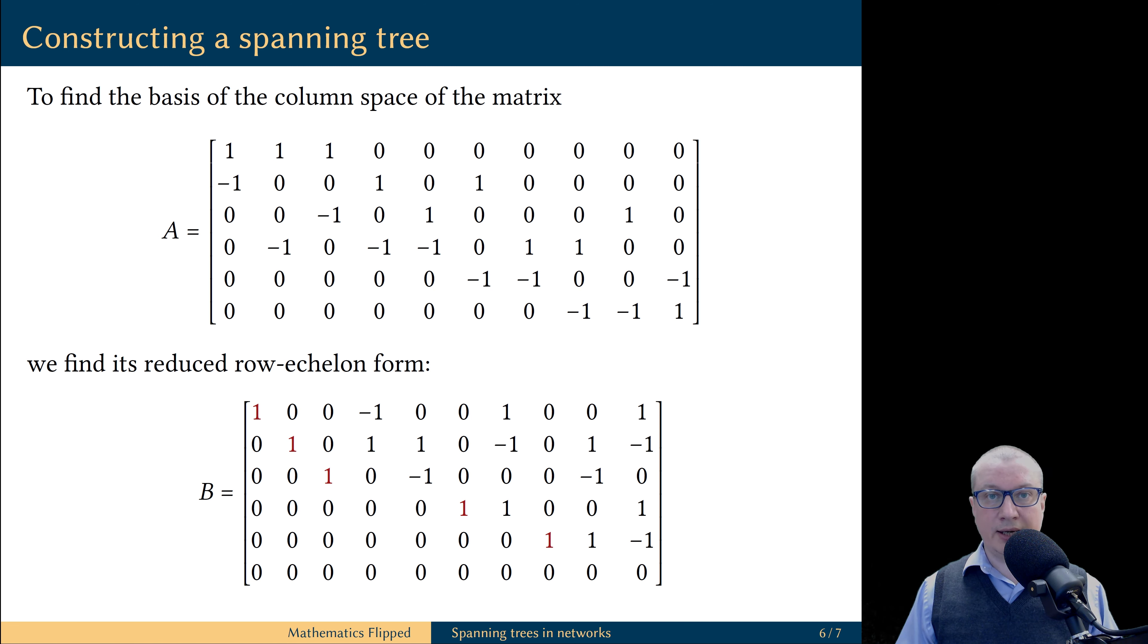And we can do this by applying the Gauss-Jordan elimination procedure. This video explains how to do it. In the reduced row echelon form, we notice that there are five pivot columns. There are columns 1, 2, 3, 6, and 8.